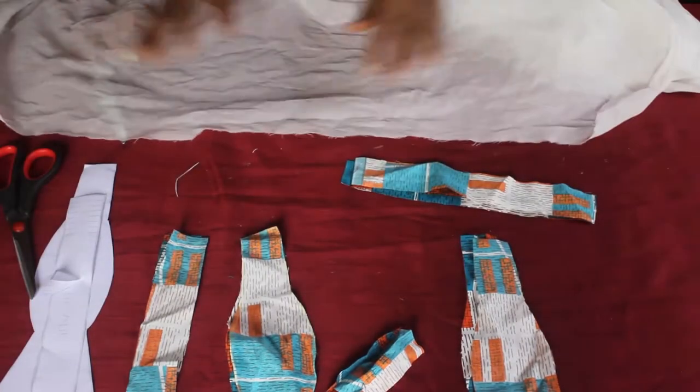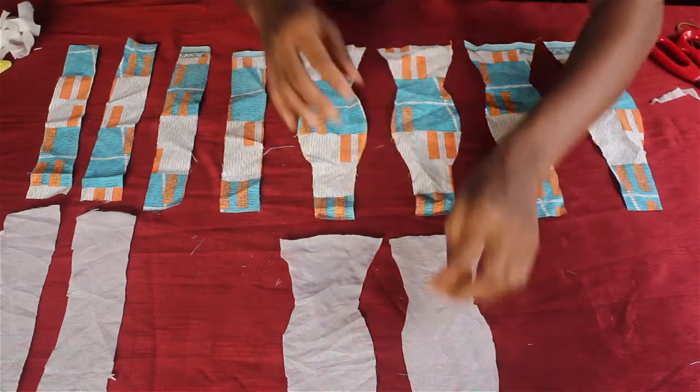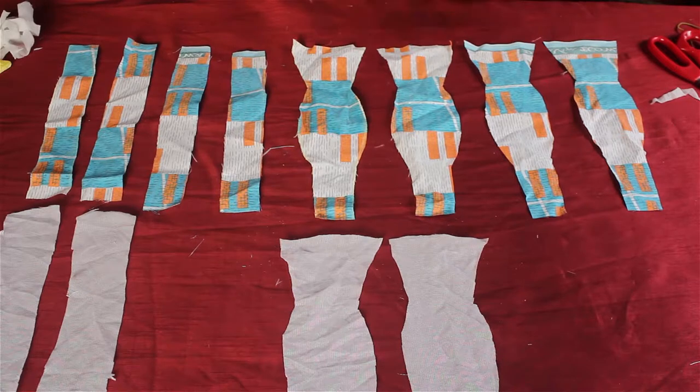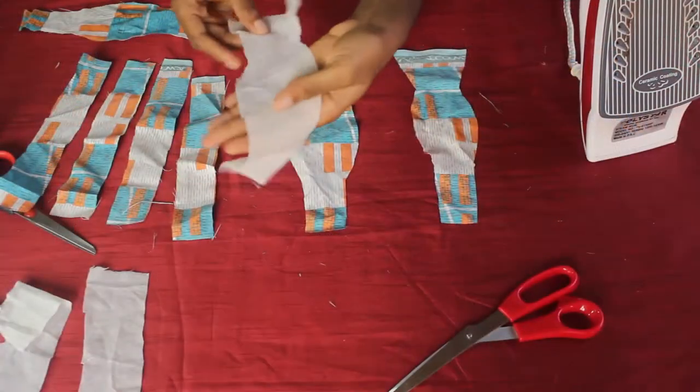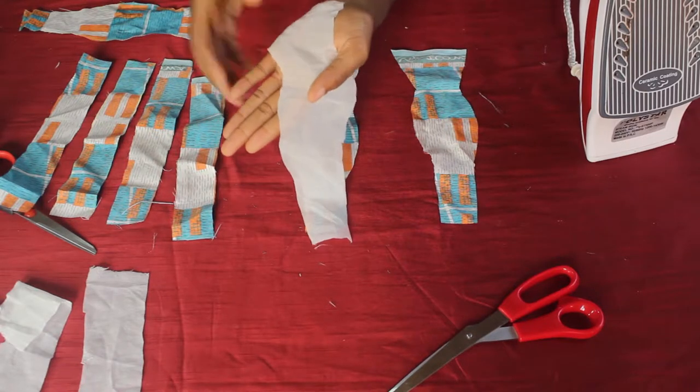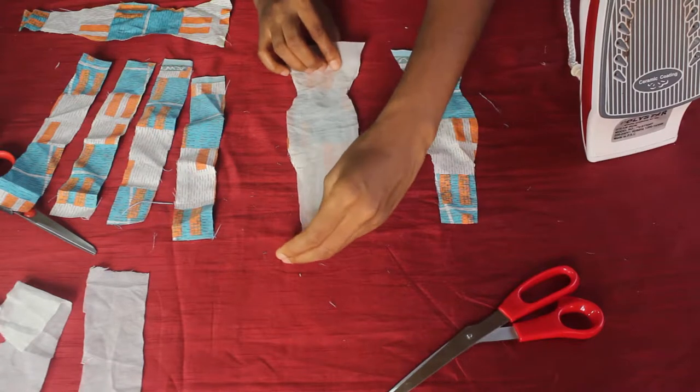Next I'm going to place the rough side of the interfacing fabric against the wrong side of a matching Ankara fabric.